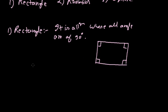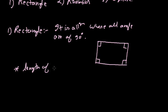As rectangle is a parallelogram, it acquires all the properties of the parallelogram. So in a rectangle, opposite sides are equal, opposite angles are equal, and the diagonals bisect each other. There is one more special property of rectangle: the length of the diagonals are equal.